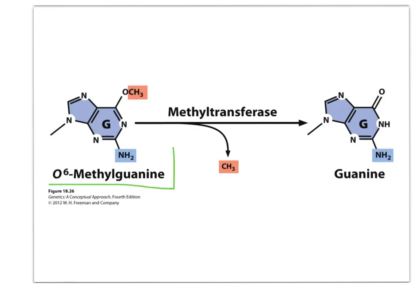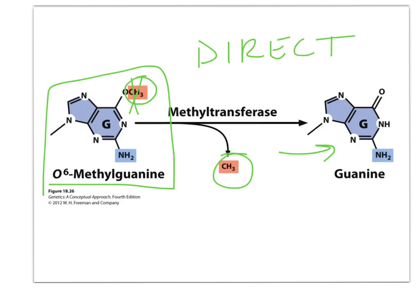And then, it works very similar to this other mechanism where it, if this is a base that's screwed up because it's got this methyl group on it, a methyltransferase just really whacks it off, lose that, and now we're back to our normal guanine. Okay, so that would be an example of direct repair, because it directly repaired it, didn't do anything else.